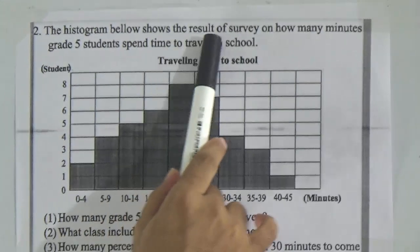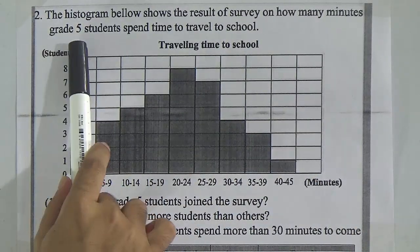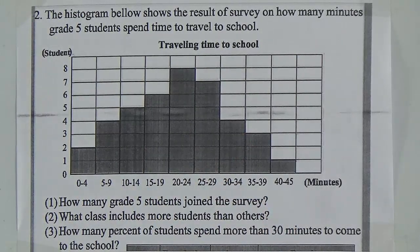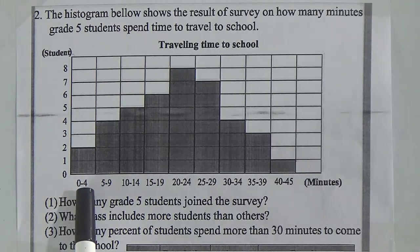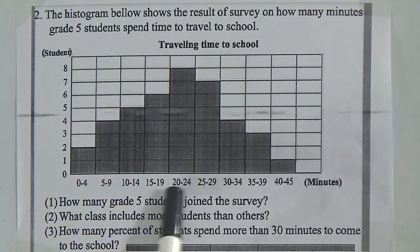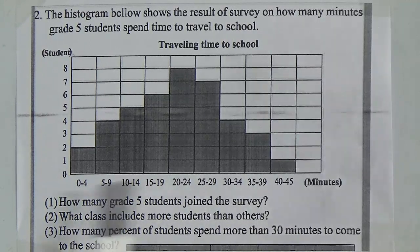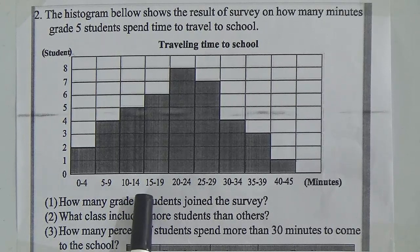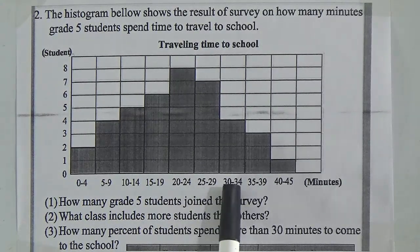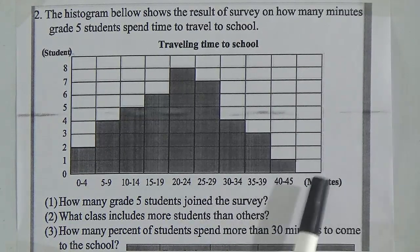The histogram below shows the result of a survey on how many minutes grade 5 students spend travelling to school. If you notice the histogram, in the horizontal axis the classes are mentioned — these represent time. First class: 0 to 4 minutes, second: 5 to 9, third: 10 to 14, then 15 to 19, 20 to 24, 25 to 29, 30 to 34, 35 to 39, and the last class 40 to 45 minutes.